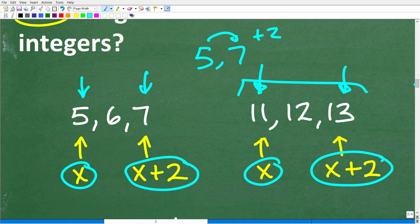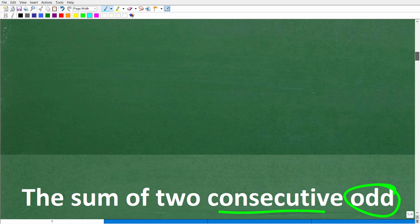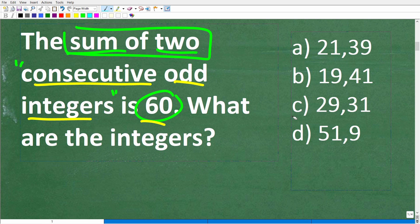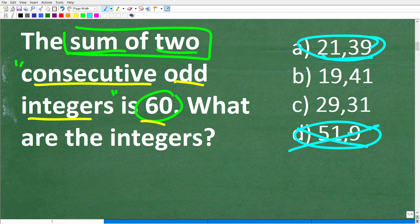Now that we understand what consecutive odd integers are, we can go back to this problem right here and our multiple choice question. And we can just look, like, hey, do we have any consecutive odd integers? Well, this right here, there's a lot more odd numbers between 21 and 39, 51 and 9. This definitely doesn't make any sense right here. But you can clearly see that 29, and then we have 30 and 31. These are consecutive odd integers, and they add up to 60. So, this is the right answer.